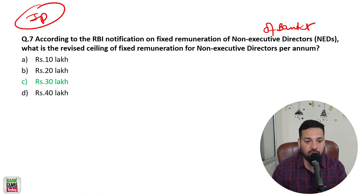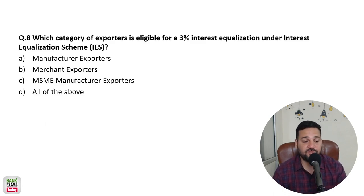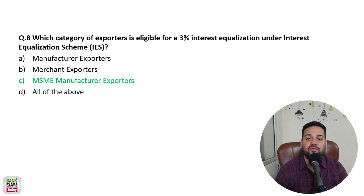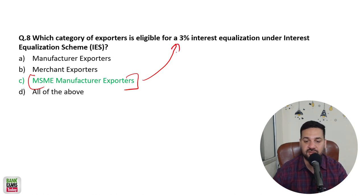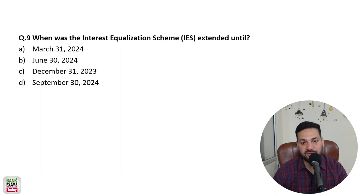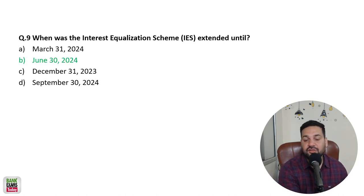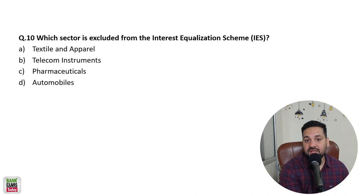Which category of exporters are eligible for 3% interest equalization under the Interest Equalization Scheme? MSME manufacturer exporters are eligible for 3% interest equalization subsidy. The Interest Equalization Scheme has been extended till 30th June 2024.